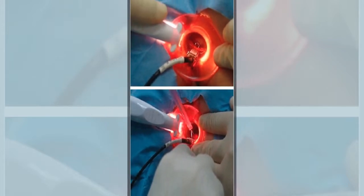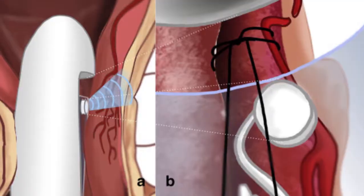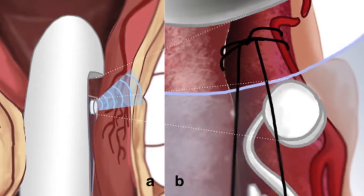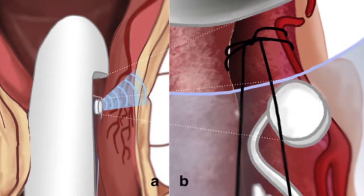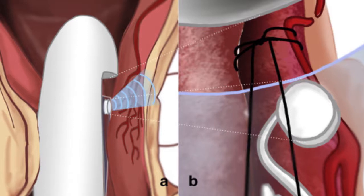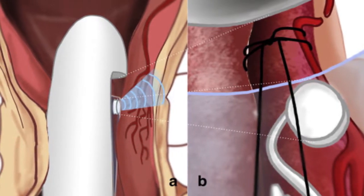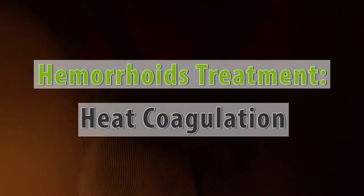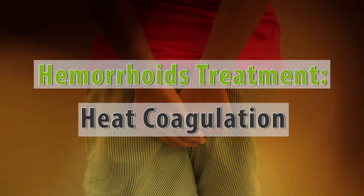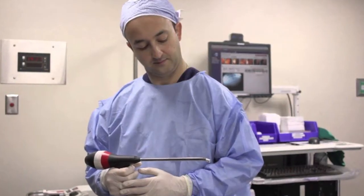Doppler-guided artery ligation cuts off the blood supply to hemorrhoids rather than removing them. This treatment works best for grade 2 and 3 hemorrhoids, and while it is meant to reduce postoperative pain, 20% of patients still report pain after the procedure, particularly when having a bowel movement.